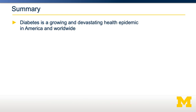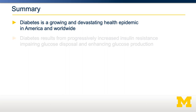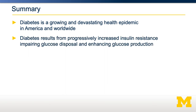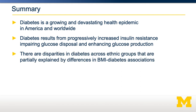In summary, diabetes is a growing and devastating health epidemic both in America and worldwide. It results from progressively increased insulin resistance, impaired glucose disposal, and the inability to suppress glucose production. There are important social disparities in diabetes across ethnic groups. Some of this is partially explained by differences in BMI-to-diabetes relationships across ethnic groups, but there's still much we have to learn about what is causing these socioeconomic disparities in diabetes rates.